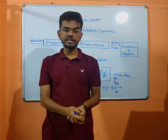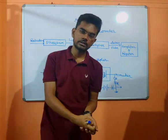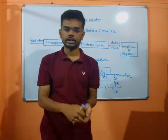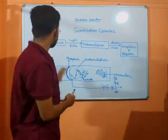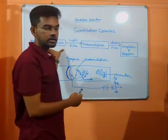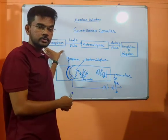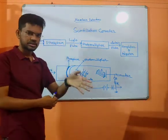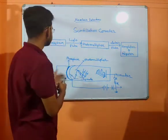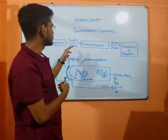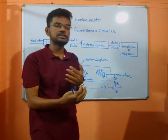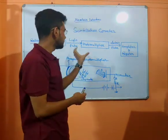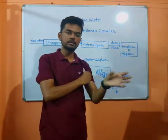The basic scintillation counter has three basic constructive portions. First of all, phosphor. Phosphor is where the light impulse is produced. The light impulse then goes to a photo amplifier.